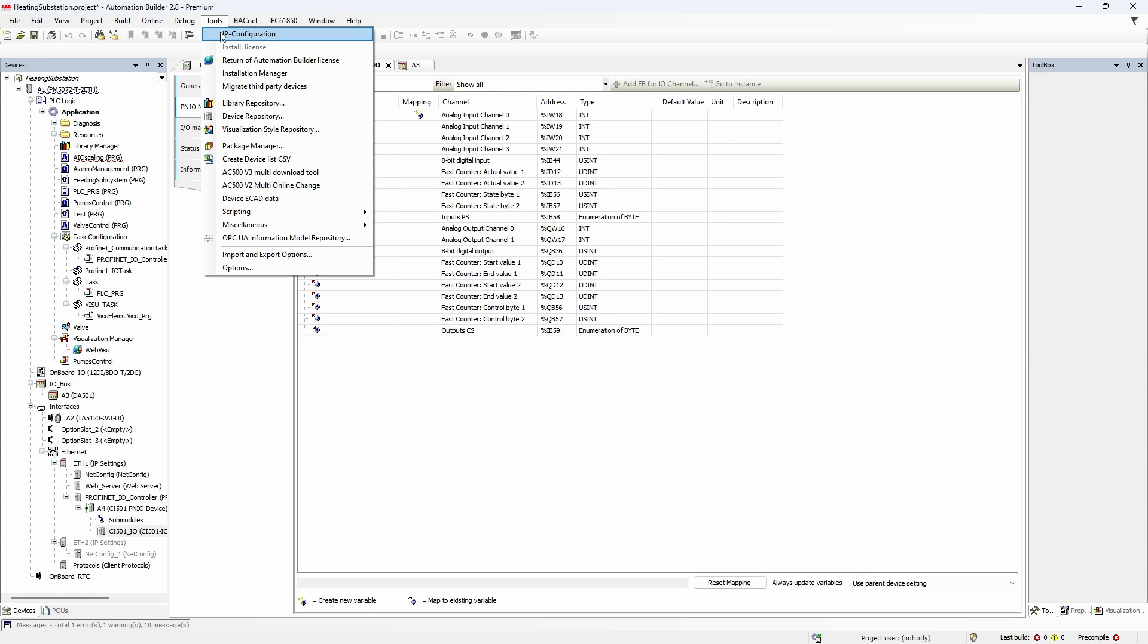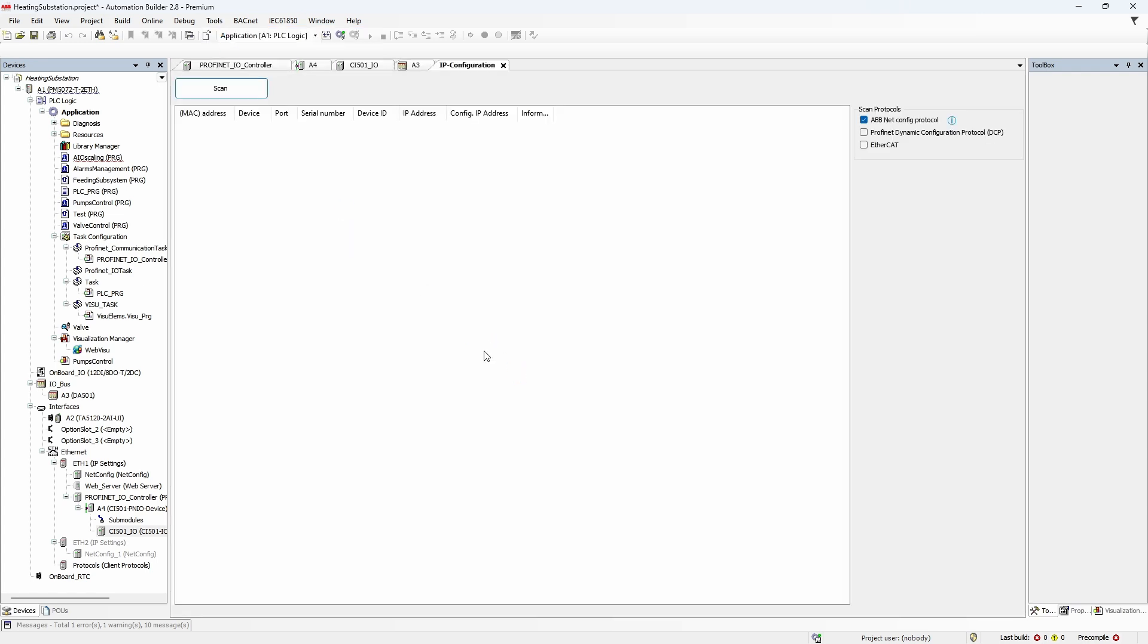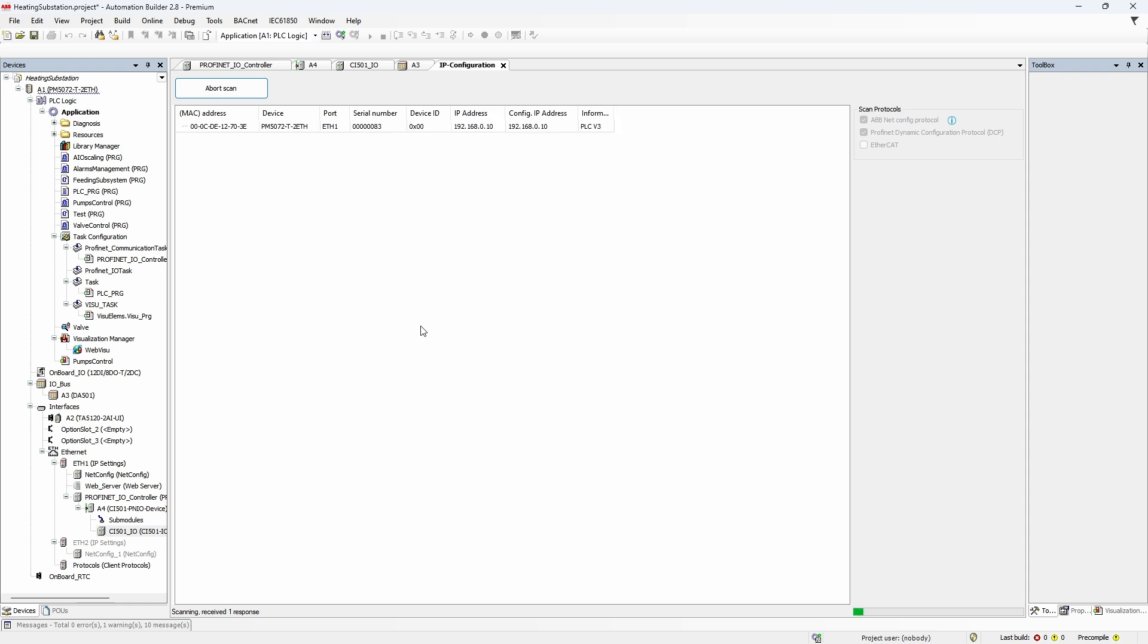Maybe one more thing I would like to stop on before loading application to the PLC is IP configuration tool and the second way to set the PROFINET I.O. device name. Make sure that in Scan Protocols you select PROFINET dynamic configuration protocol and click Scan.